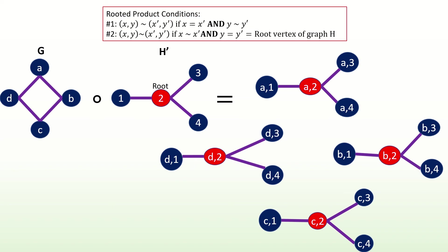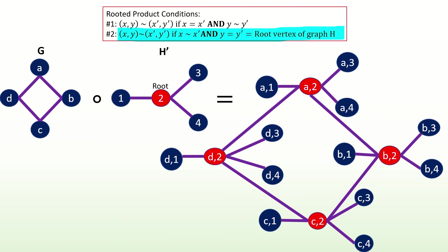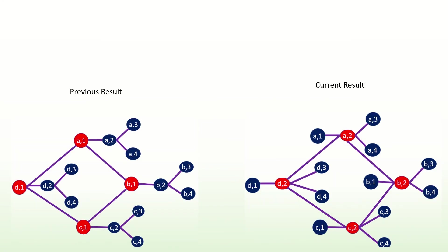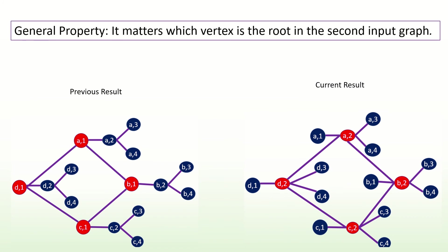Next, let's find all the adjacencies that derive from our second condition. These will be between vertices whose right entry equals the root vertex 2 and whose left entries are adjacent. Here they are. This is the result of the rooted product of g with h prime. Notice that it is not isomorphic to our previous result. An easy way to see this is that our current result has vertices of degree 5, while our previous result does not. This demonstrates that it matters what vertex in the second graph is the root vertex.